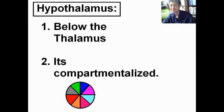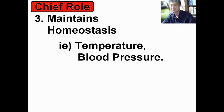Now, the hypothalamus. It's below the thalamus. It's compartmentalized. It maintains homeostasis. For example, blood pressure, temperature.